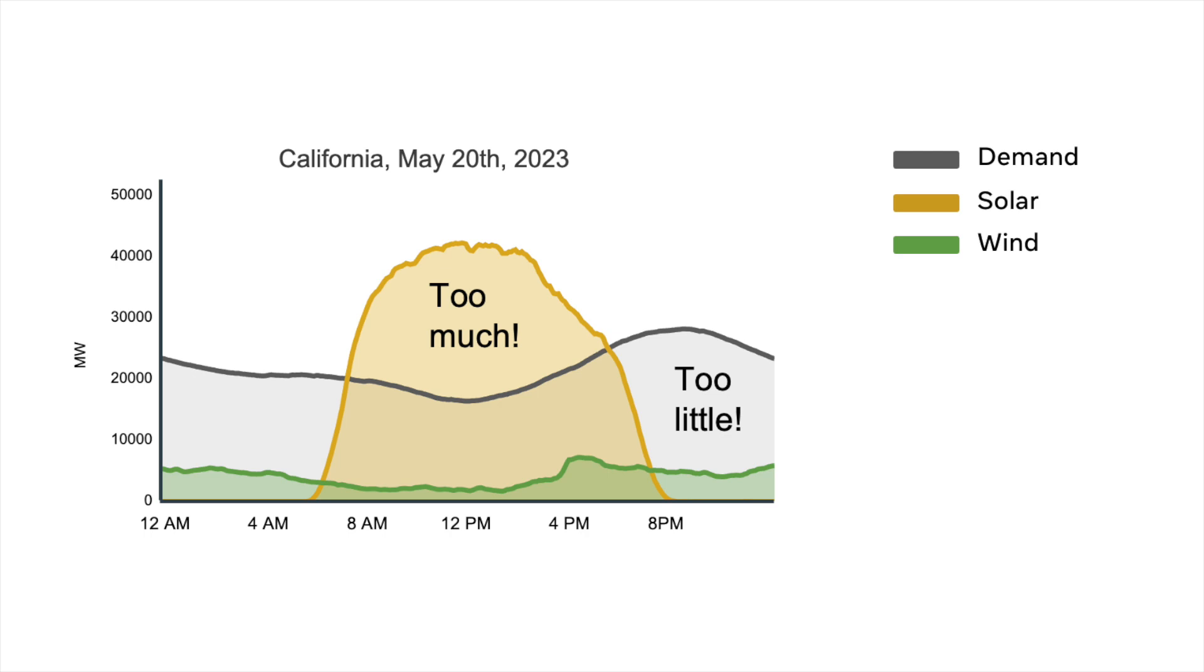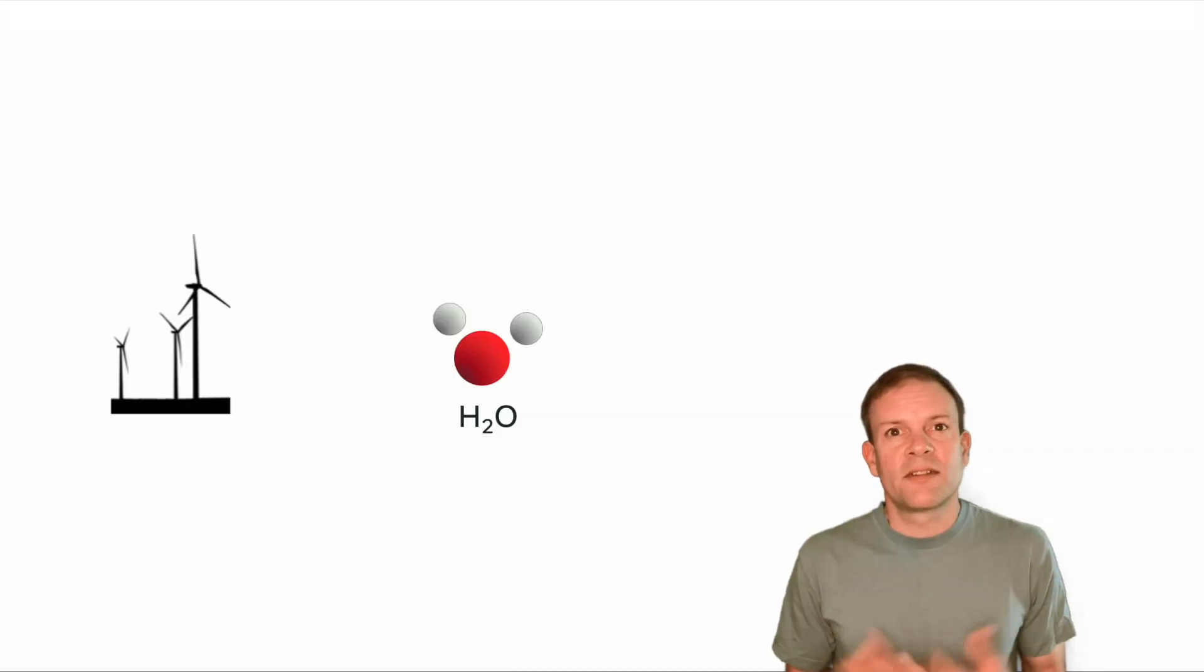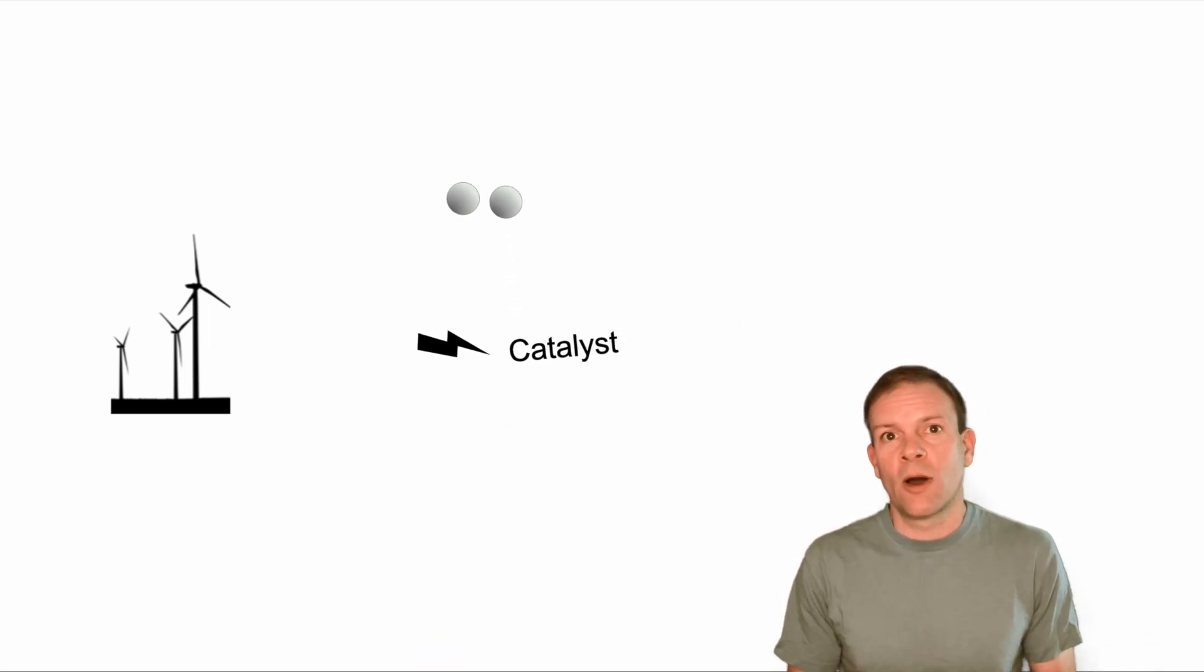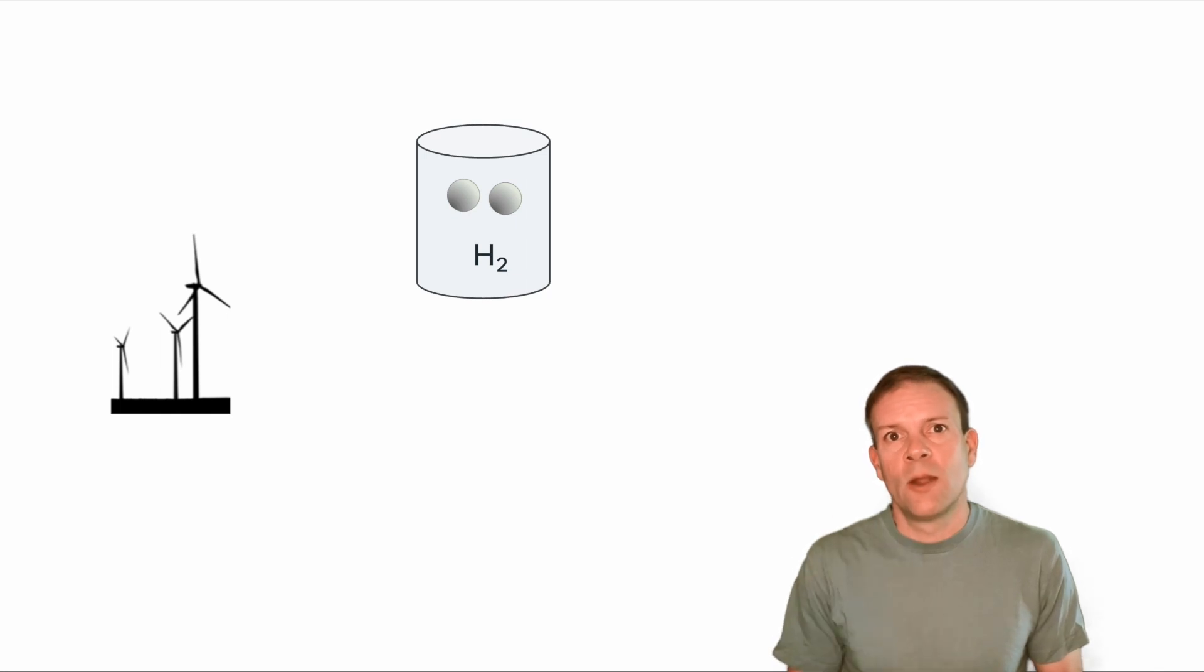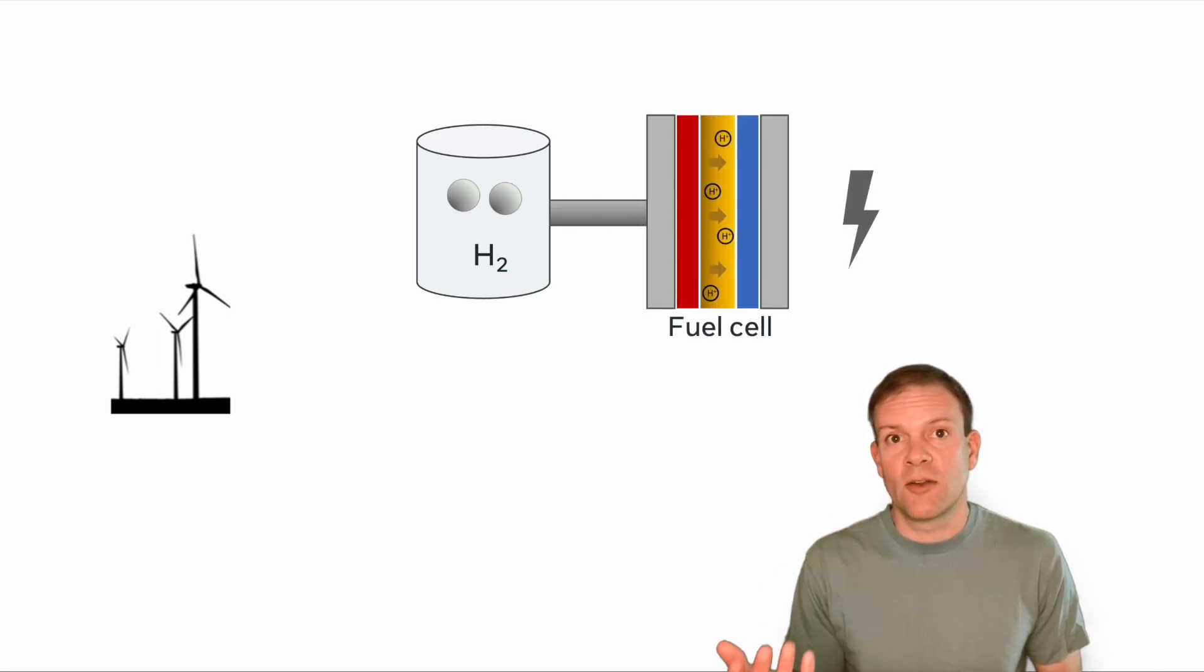So the problem is we need to figure out how to take the energy when we have it in surplus and move it to times when we have higher demand. There's a lot of ways to store renewable energy, but one of the most promising and scalable is to use surplus renewable energy to split water into oxygen and hydrogen. We can then store that hydrogen and later use it in a fuel cell to generate electricity.